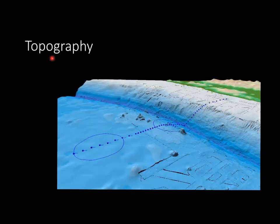Let's take a look at topography and salt. Topography is the shape and arrangement of underwater landforms — basically the mapping of what the ocean floor looks like.